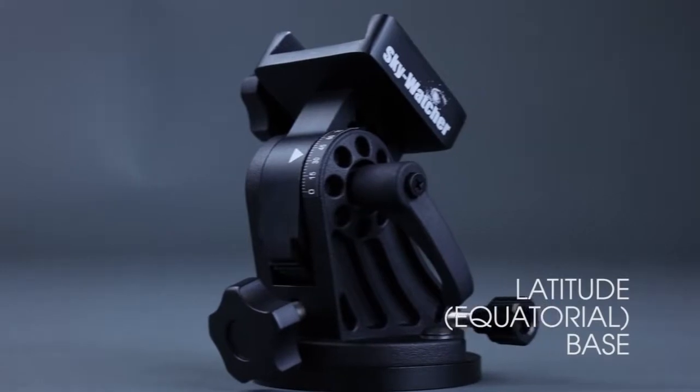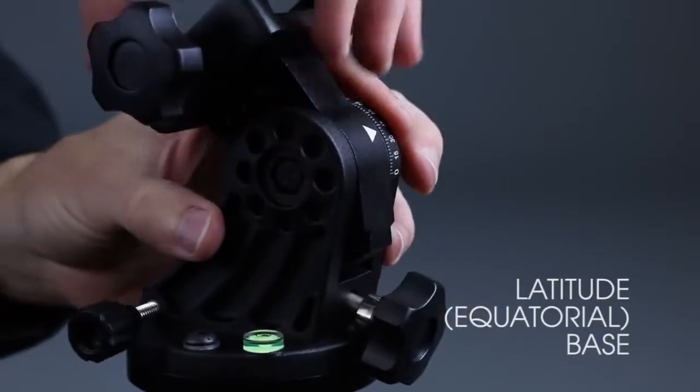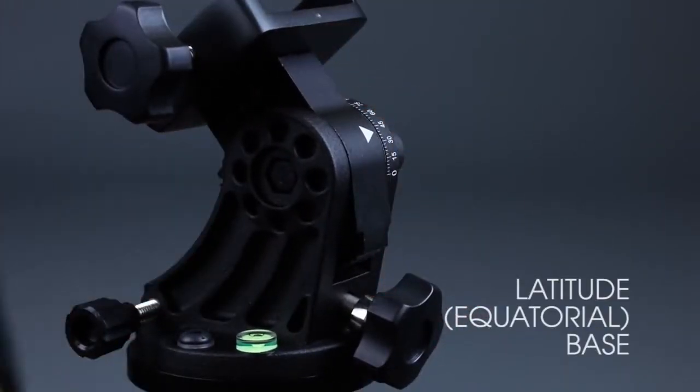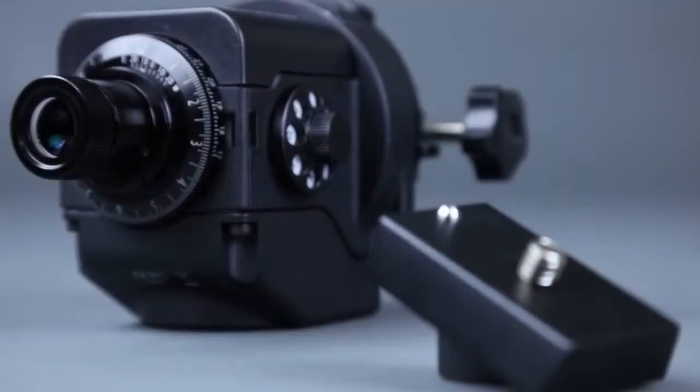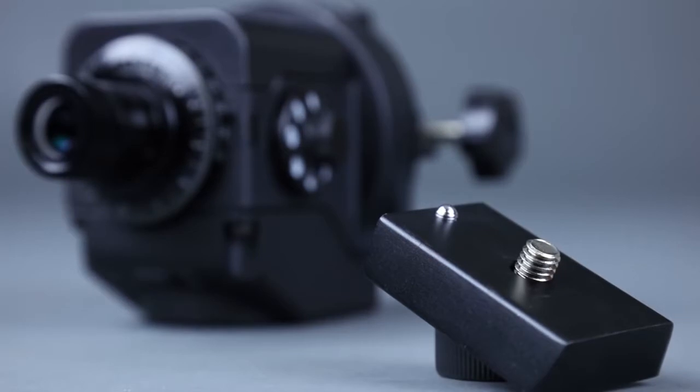The Latitude Base is an optional accessory that makes polar alignment easier. The Latitude Base can mount directly to any tripod legs with a 3-8 or 1-4-20 thread and features a quick-release plate for easy removal of the StarAdventure tracking platform.